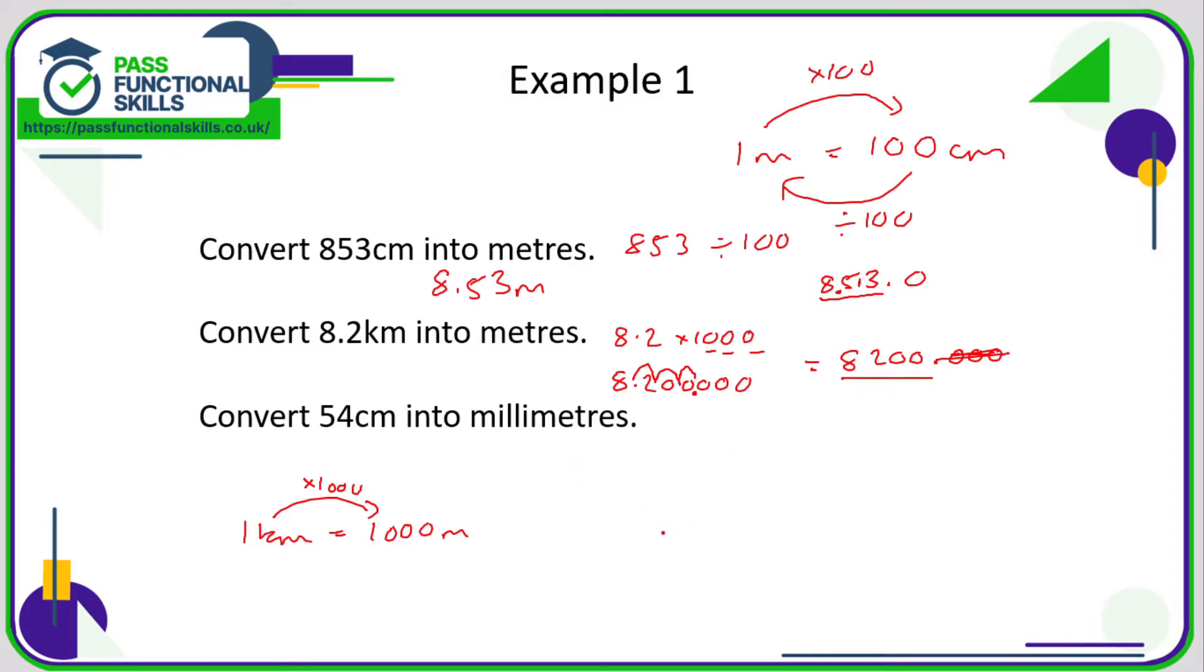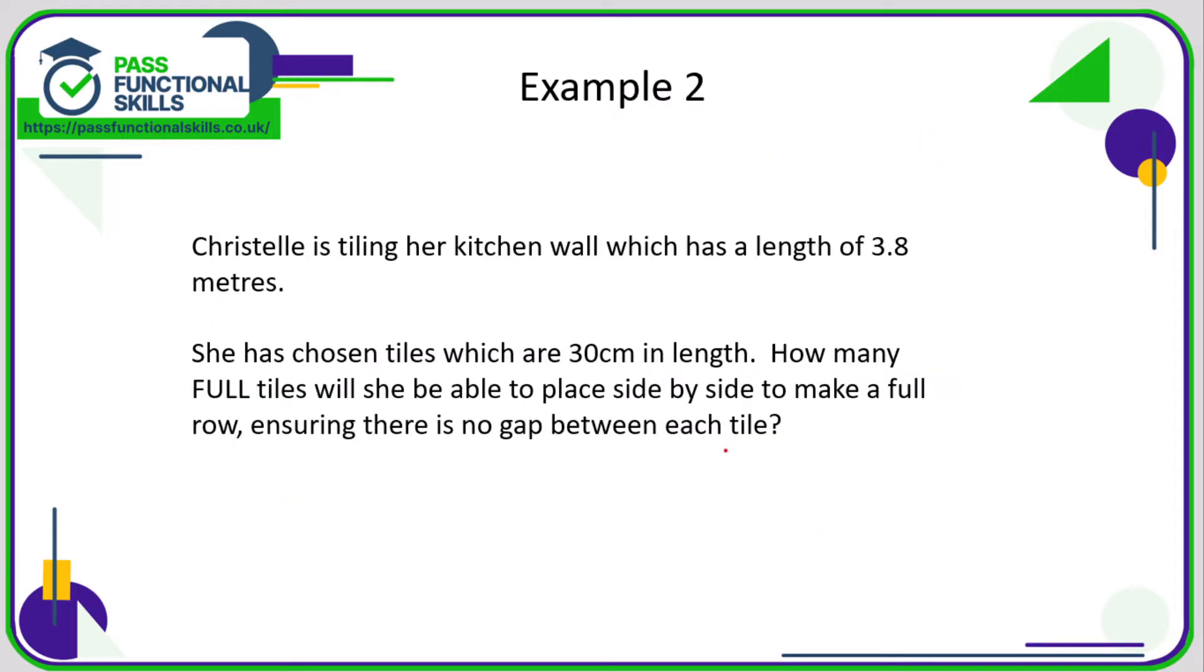The final example: hopefully we know that one centimeter is 10 millimeters, so to go from centimeters to millimeters we are multiplying by 10. All we need to do is just stick a zero on the 54 and we've got 540 millimeters.